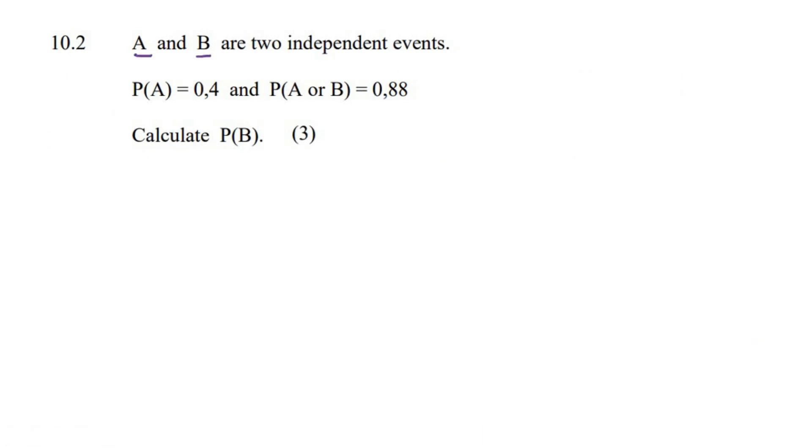This question says that A and B are independent. Let's stop right there. When two events are independent, then mathematically you can say that P of A and B is equal to P of A multiplied by P of B.